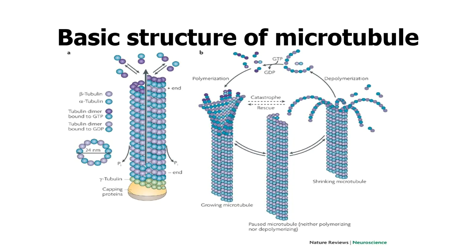The building components of the microtubules are the alpha tubulin and the beta tubulin. There is another tubulin system known as the gamma tubulin system. Gamma tubulin is usually found at the negative end, and it is involved in nucleation — the initial stage of formation of the microtubule system.